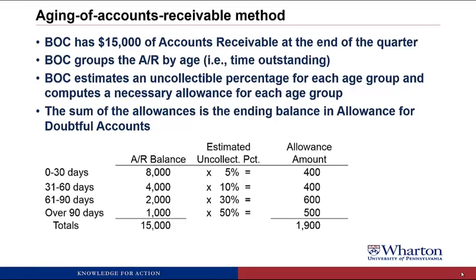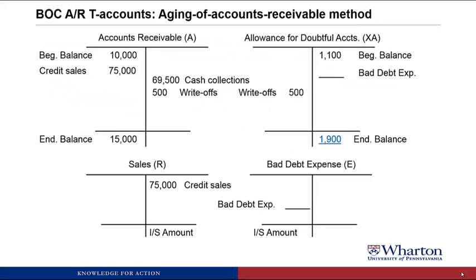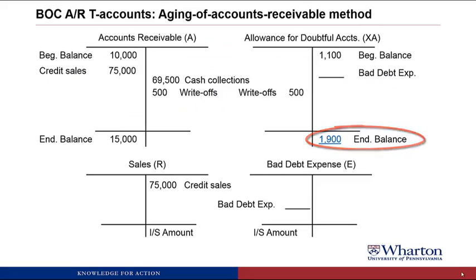Now that we've calculated the ending balance in allowance for doubtful accounts, we need to calculate the bad debt expense for the quarter. We put the ending balance in the allowance T account — we've got only one thing missing, that's bad debt expense. Taking the ending balance plus the write-offs minus the beginning balance, we end up with $1,300 of bad debt expense, which will also show up on the income statement.